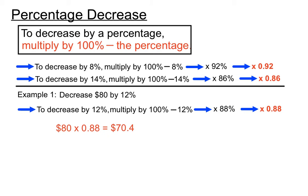Since we work in dollars and cents, we put an extra zero on the end to make it sensible. So $80 decreased by 12% gives a final answer of $70.40.